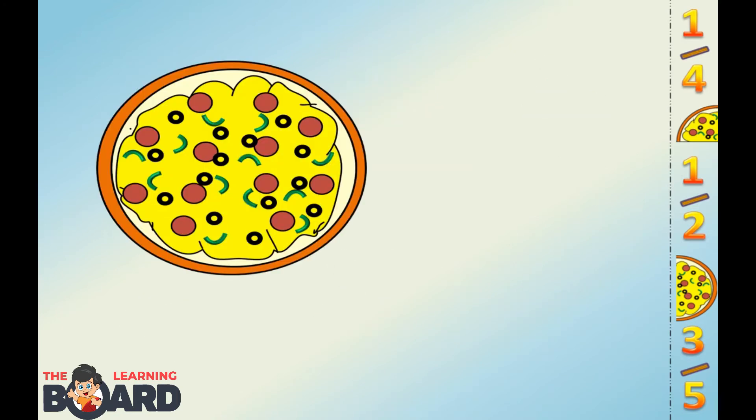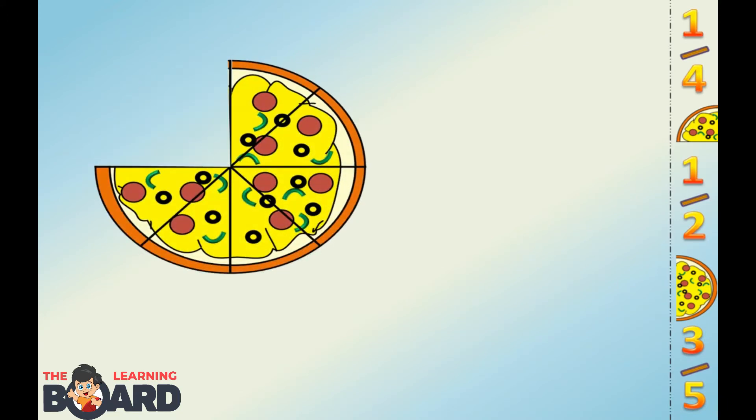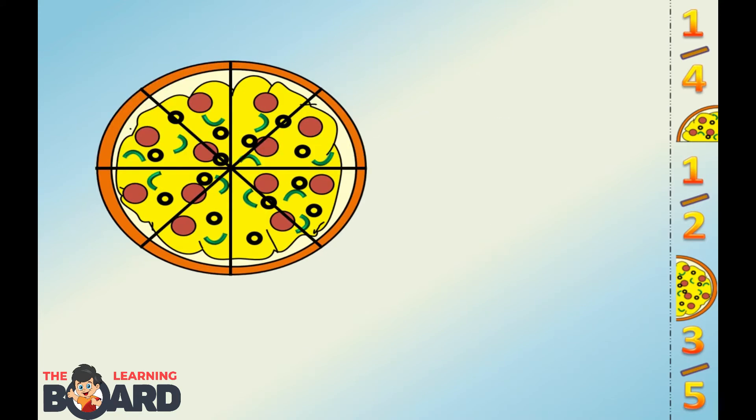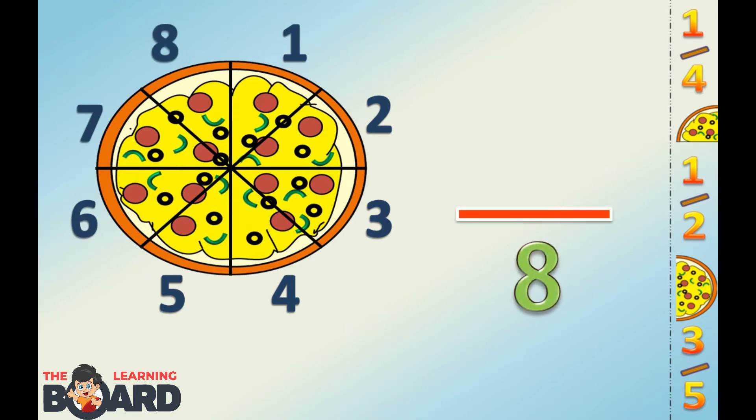Suppose you divide a pizza into eight equal slices. You ate three slices. What fraction of pizza did you eat? Here your pizza is divided into eight equal slices. So the bottom number of your fraction will be eight.